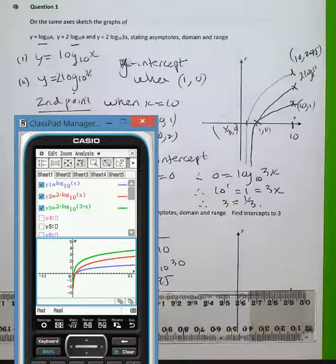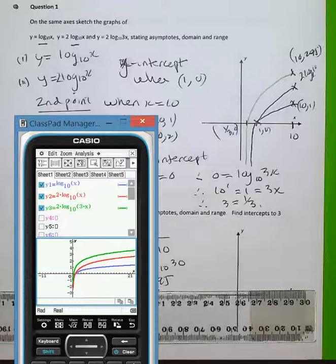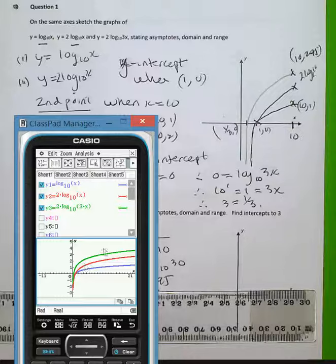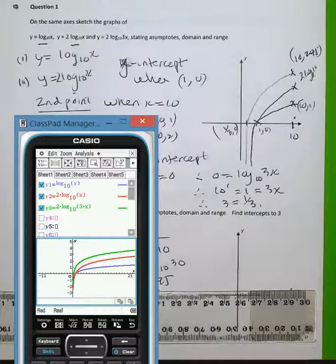Replicating that on the calculator, and please make sure you are doing this on your calculator, you can see the log x, the base 10, the 2 log 10, 2 times dilation, and what effectively is almost a 3 times dilation in the third instance. You can see all the good strategies of your calculator.